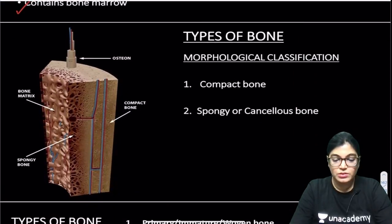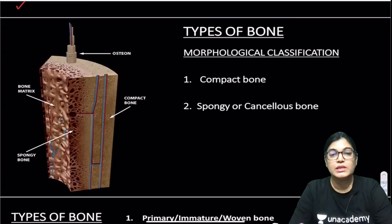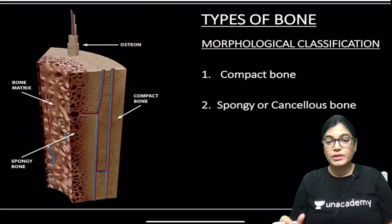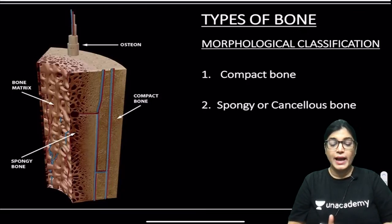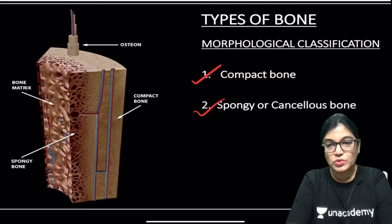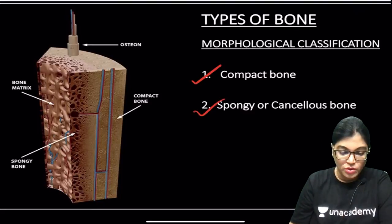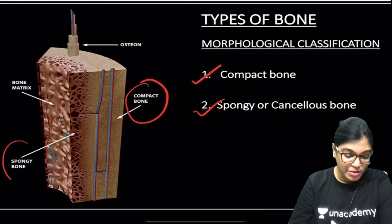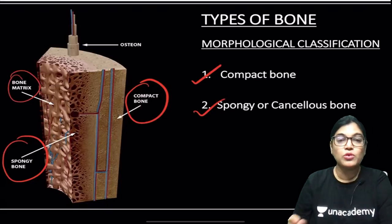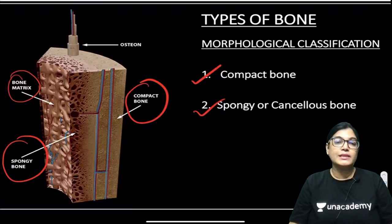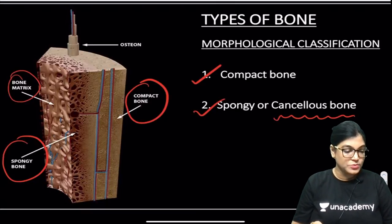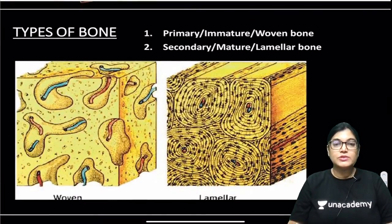Now, types of bone. In morphological classification, we have compact bone and spongy or cancellous bone — two types. The compact bone is the outer shell of long bones, and the inner part containing bone marrow is the spongy bone, also called cancellous bone.